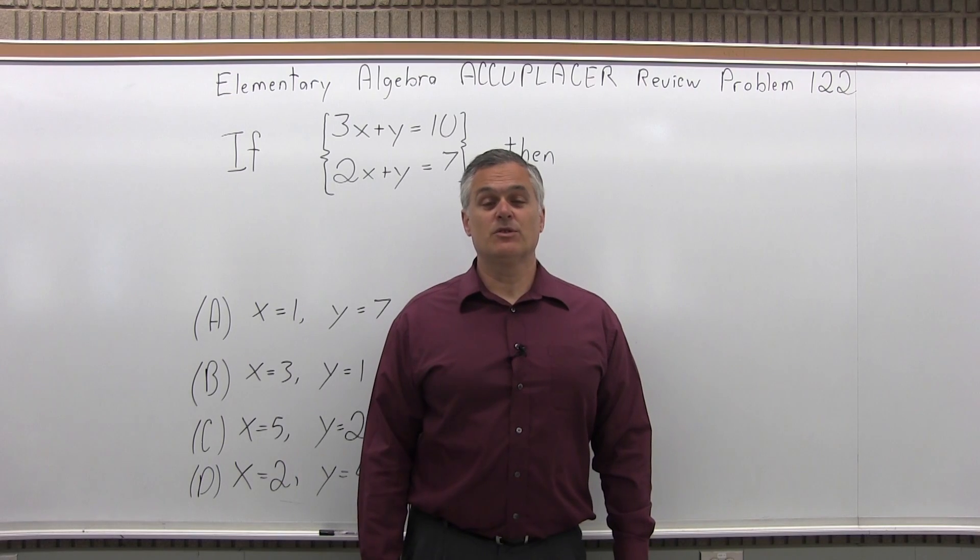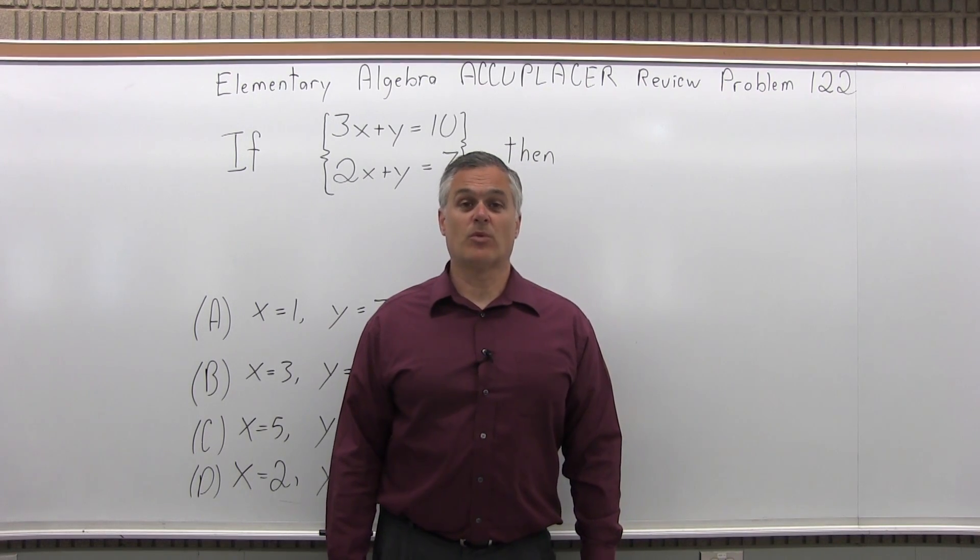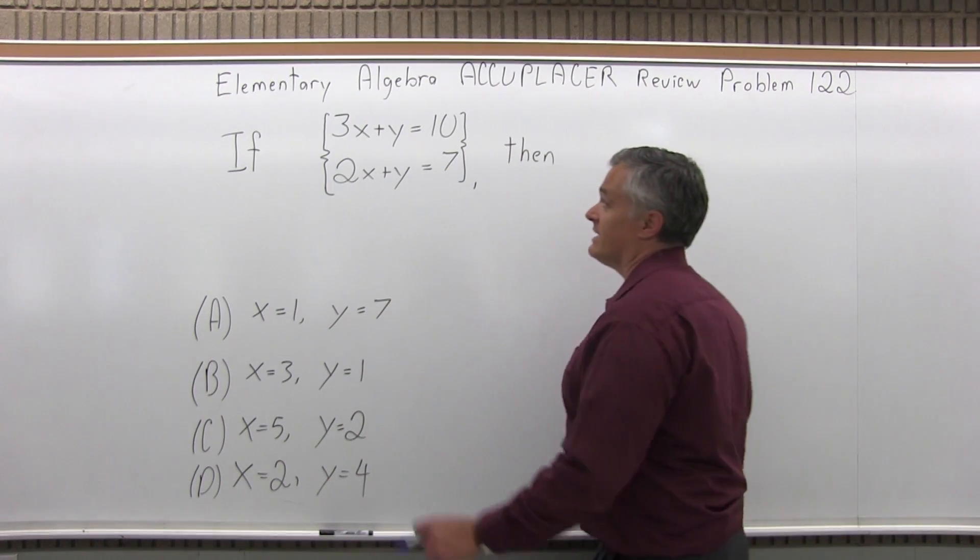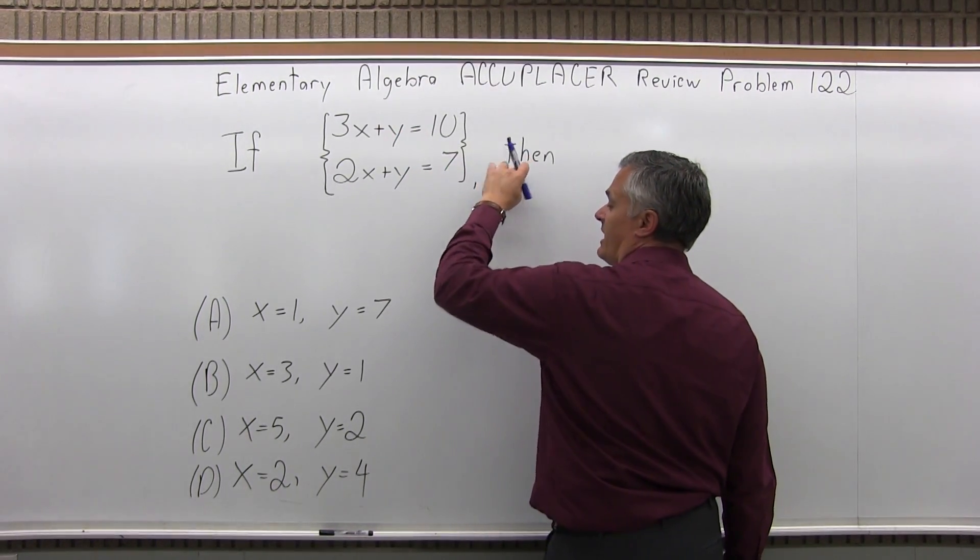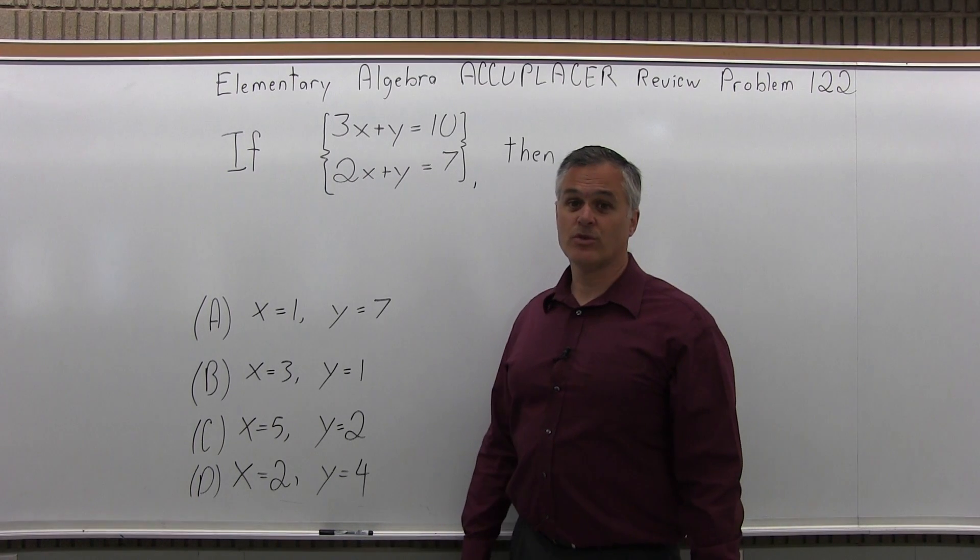This is the Elementary Algebra Accuplacer Review, Problem 122. It says if 3x plus y equals 10 and 2x plus y equals 7, then which one of the following four options is true?